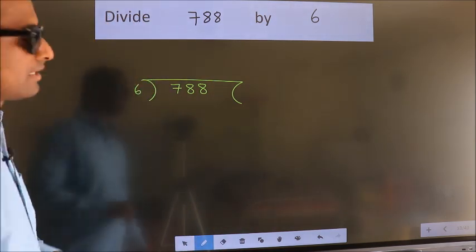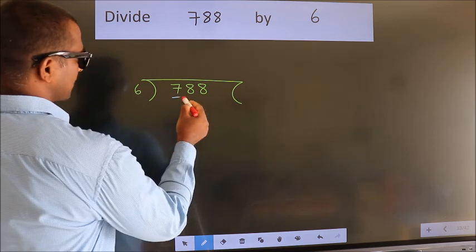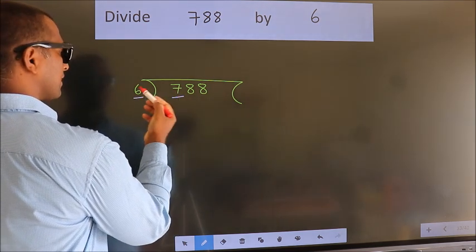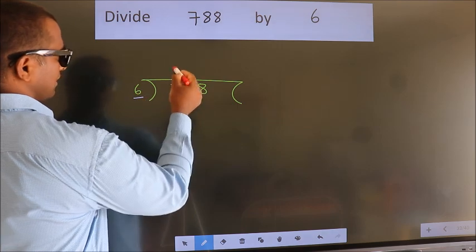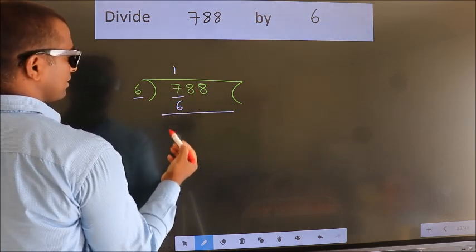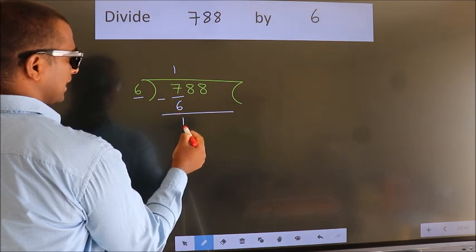Next, here we have 7, here 6. A number close to 7 in the 6 table is 6 once 6. Now we should subtract. We get 1.